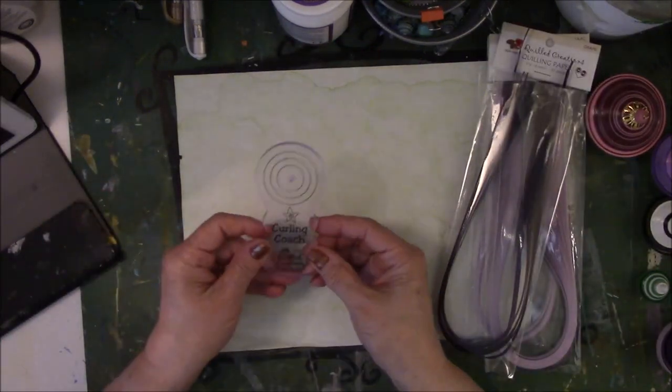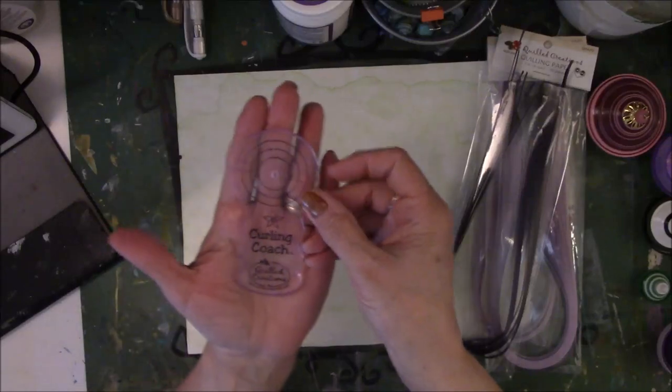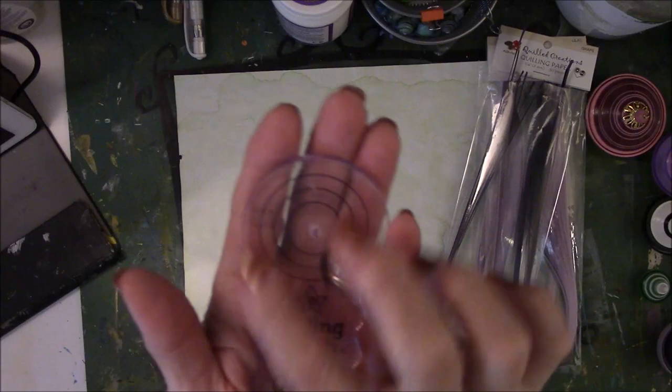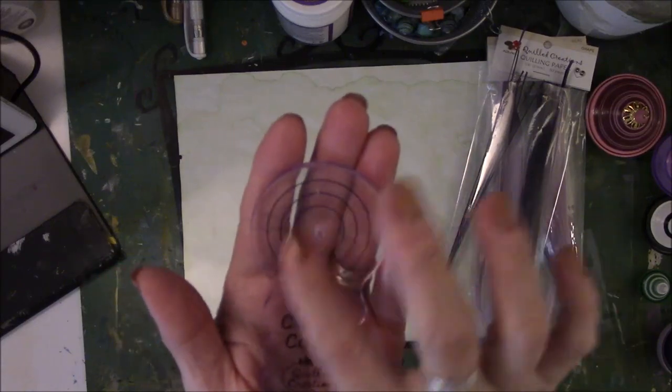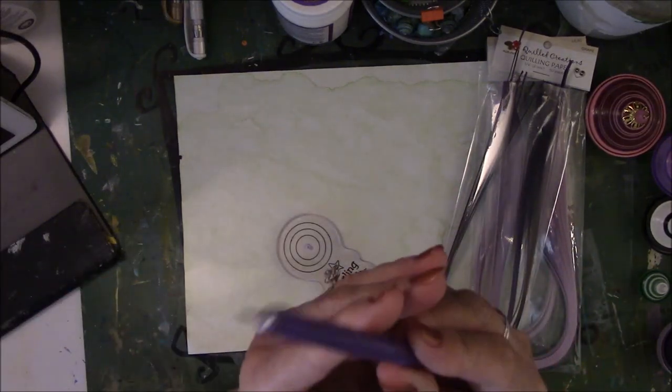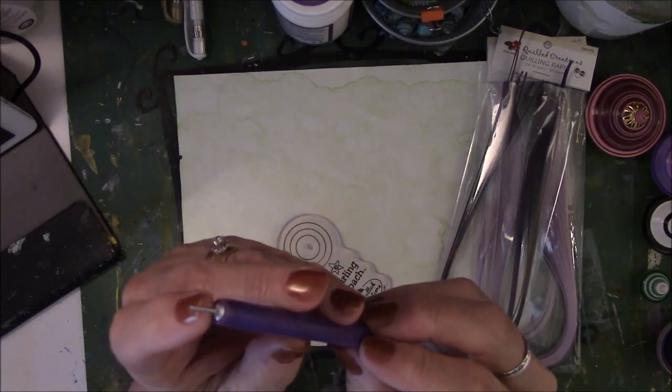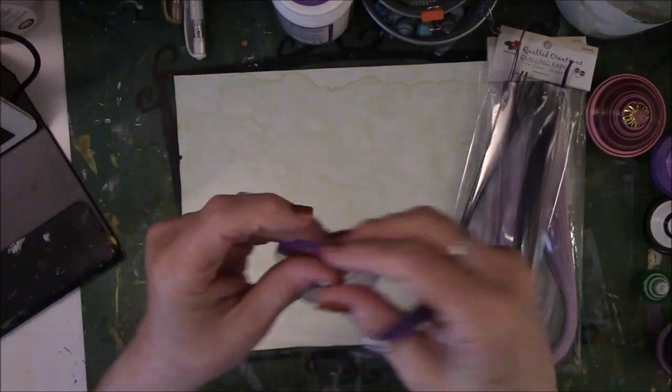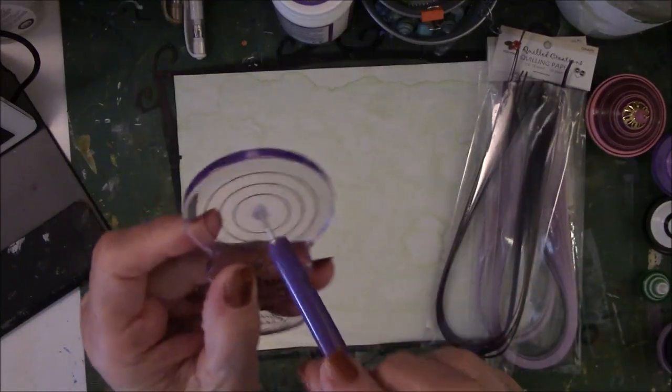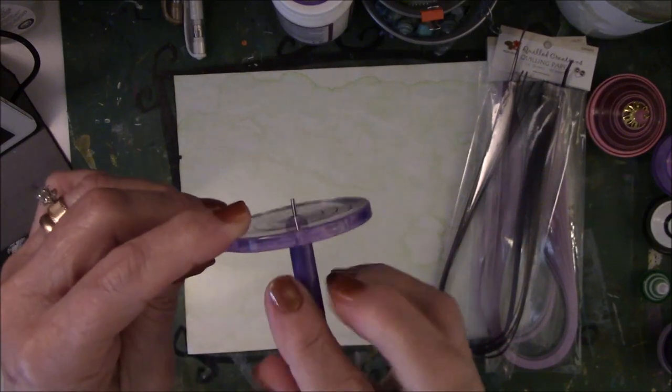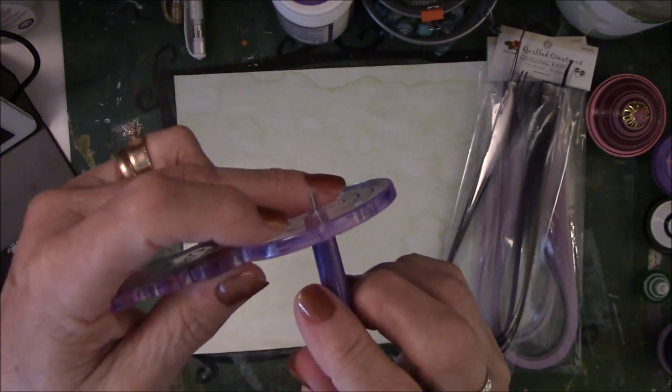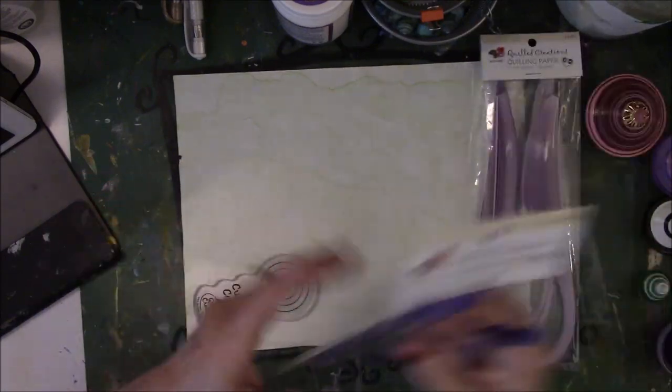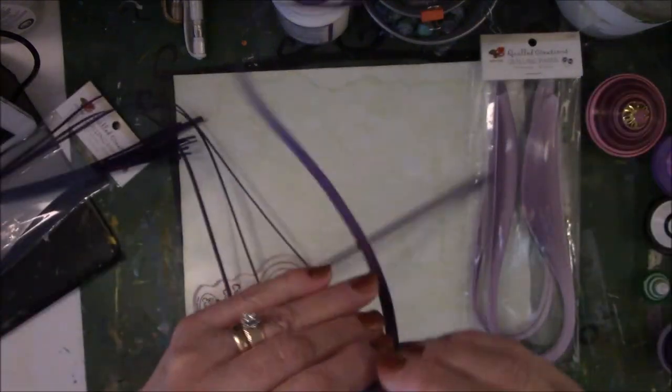What you're going to need is what's called a curling coach. It makes it easier to keep the circle under control as you're rolling it. And then you're going to need a quilling tool. This quilling tool has a slit in it and you will put the paper in the slit and then turn. So you're going to stick this inside the hole in the quilling coach and then we're going to just turn, turn, turn.